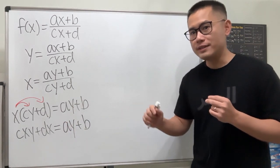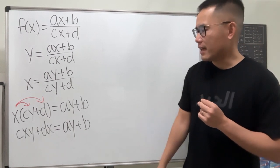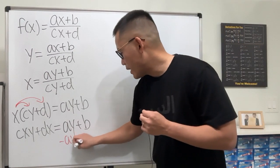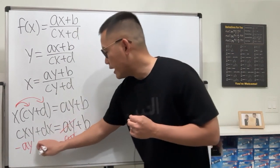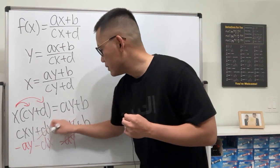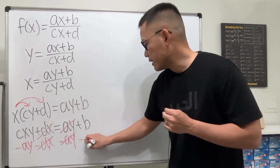Now we want to put all the y's together on one side, and then the rest on the other. So that's minus ay here, and minus ay here. So that this and that cancel. In the meantime, that's minus dx here. So this and that cancel, and then that's minus dx here.